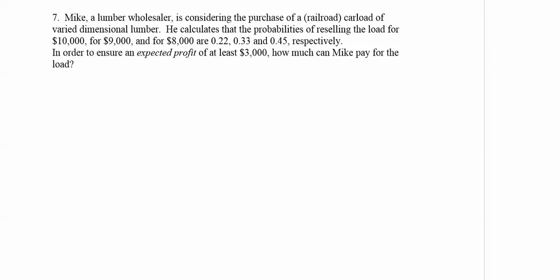Mike, a lumber wholesaler, is considering the purchase of a railroad car load of very dimensional lumber. He calculates that the probabilities of reselling the load for $10,000, $9,000, and $8,000 are .22, .33, and .45, respectively. In order to ensure an expected profit of at least $3,000, how much can Mike pay for the load?